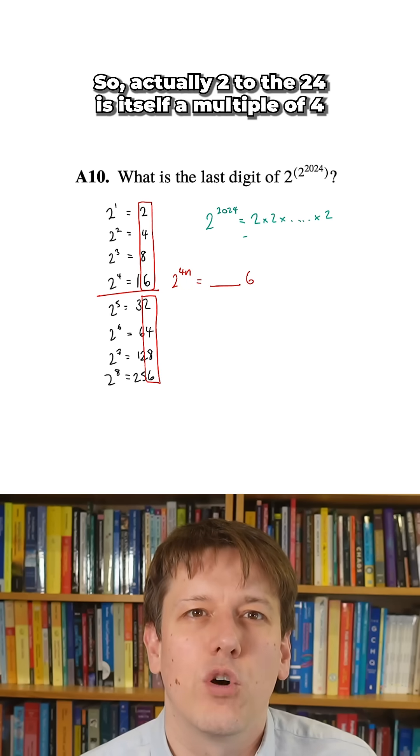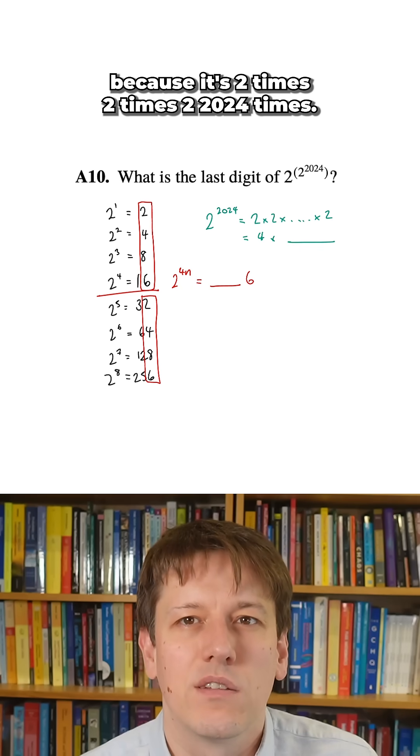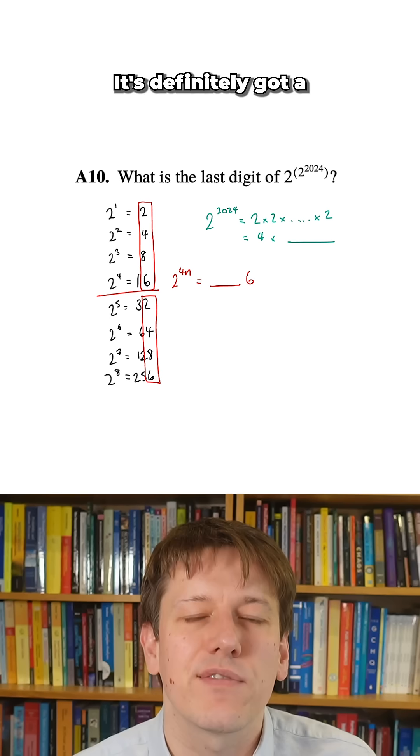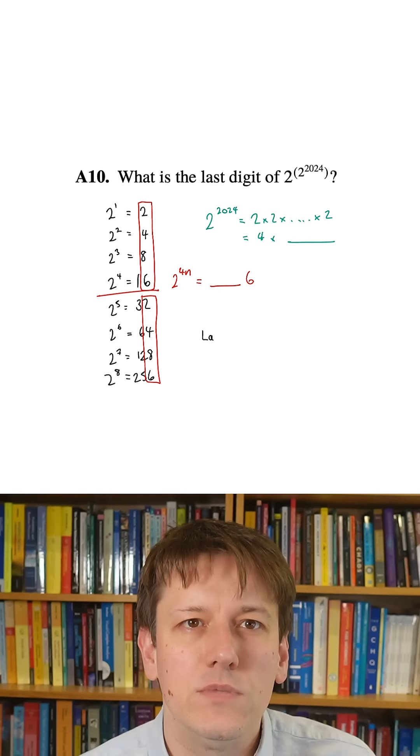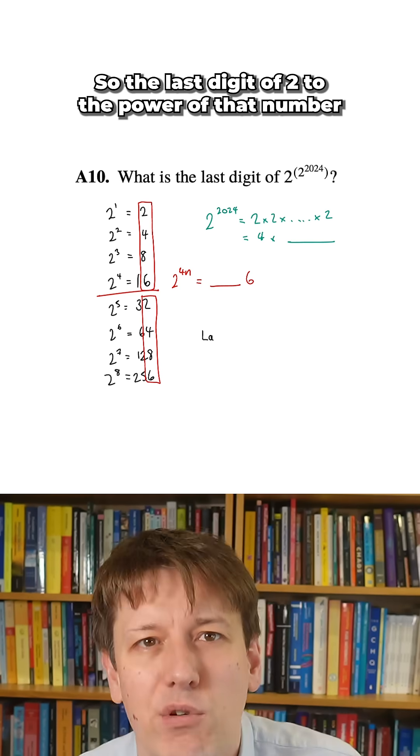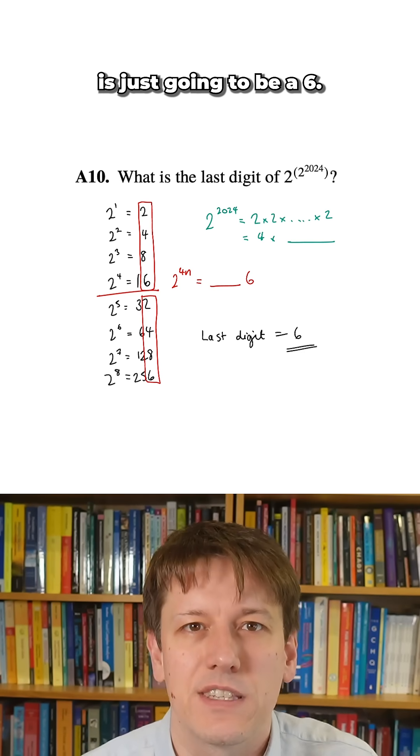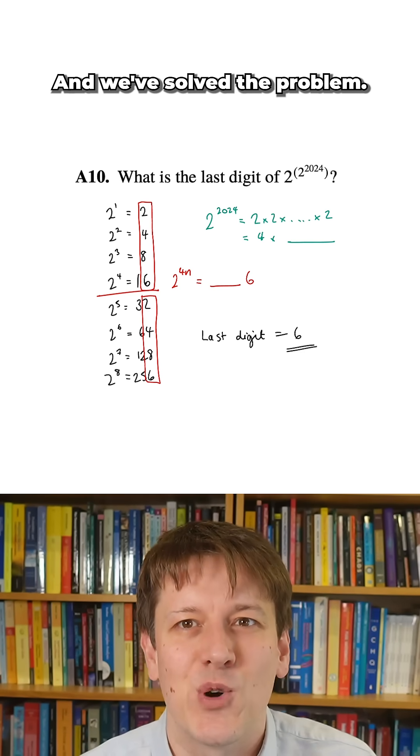So actually two to the 24 is itself a multiple of four because it's two times two times two, 24 times. So it's definitely got a two times two in it, it's definitely got a factor of four. So it's a multiple of four. So the last digit of two to the power of that number is just going to be a six, and we've solved the problem.